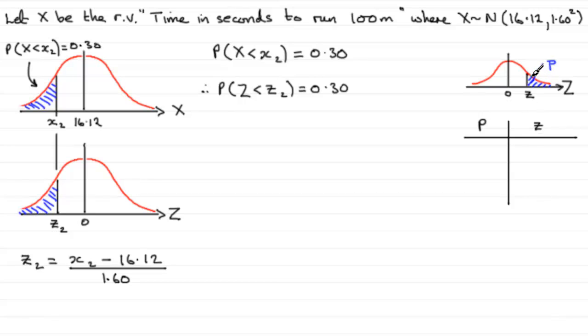But they give the area to the right of Z, and Z is on the positive side of 0, not as we've got over here. So to get around this problem, what we can do is say, well okay,